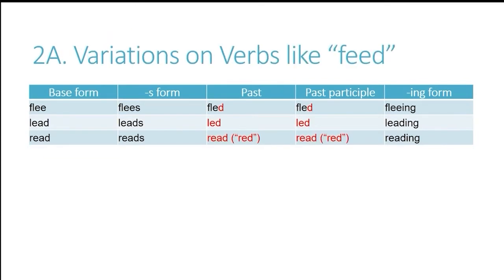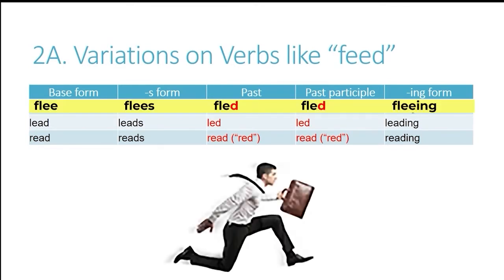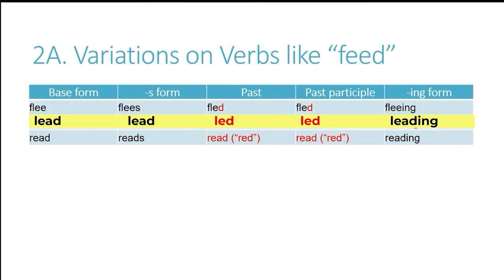Now we also have some variations on verbs like feed. For example, the verb flee does not have a consonant ending in the base form. But when we convert it to the past and past participle, a consonant sound, d, is added. So it goes flee, fled, fled. The next one is lead, which follows the same pronunciation pattern: lead, led, led.